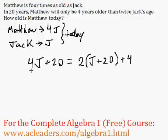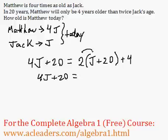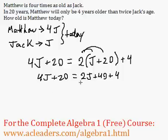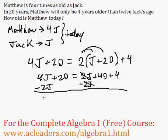Just quickly recapping: this is Matthew's age 20 years from now, and this is Jack's age 20 years from now. So by then, Matthew will be four years older than twice Jack's age. Once we solve for J, we will have Jack's age today. So 4J plus 20 — let's distribute the two — gives us 2J plus 40 plus 4. The four just came down here. Now I'm going to subtract 2J from both sides so that term disappears. 4J minus 2J is 2J, and 2J plus 20 is equal to 40 plus 4, which is 44.